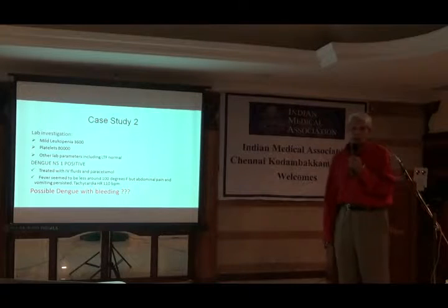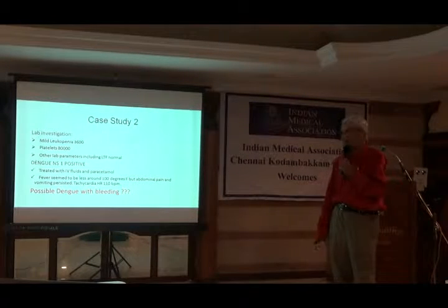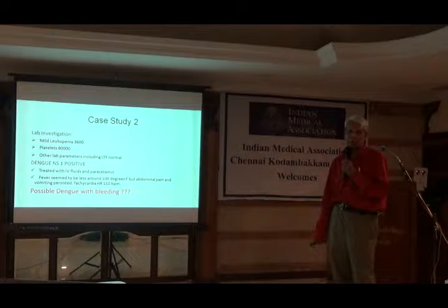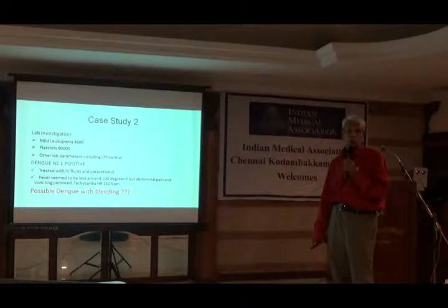On investigation, there was a leukopenia of 3,600. Platelets were 80,000. Other parameters including liver function tests were normal. As expected, the Dengue NS1 antigen was positive. I thought it was plain Dengue. Treated with high fluids and paracetamol. Fever seemed to reduce to around 100°F. But he had, in addition, abdominal pain and vomiting with tachycardia. I was wondering what it could be, and whether there was any bleeding given the platelet count of 80,000. He was quite sick.